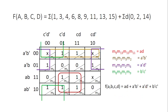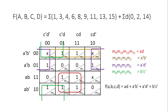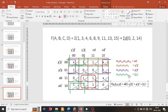Let me write the final equation. We take all the reduced product terms together. The final equation is: AD + A'D' + B'C' — these are all AND products — plus one more term. We add all the product terms together with OR, and that is the final reduced equation.